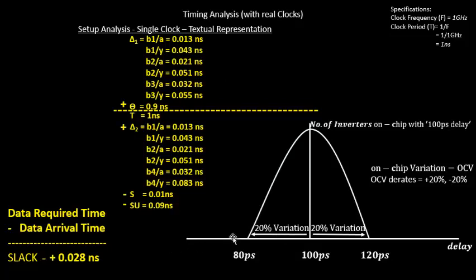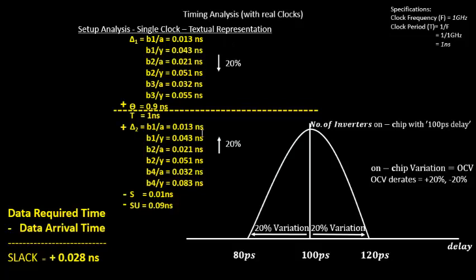The next step is to implement this 20% OCV variation on setup timing analysis. There are four possible combinations: first, increase both data arrival time and data required time delays by 20%; second, increase data arrival time by 20% and reduce data required time by 20%; third, reduce data arrival time by 20% and increase data required time by 20%; fourth, reduce both data arrival time and data required time delays by 20%.